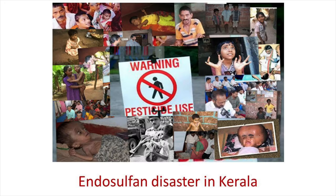A well-known example is the endosulfan disaster in Kerala — a pesticide pollution that resulted from spraying of endosulfan in the cashew plantations of Kasaragod, Kerala from 1978 to 2001. Endosulfan is a highly toxic organochlorine pesticide. It caused various diseases and endless human sufferings. Effects suffered by victims include mental retardation, physical deformities, cancers, birth disorders, infertility, cerebral palsy, epilepsy, and damage to the brain and nervous system. It also destroyed the biodiversity of the area.